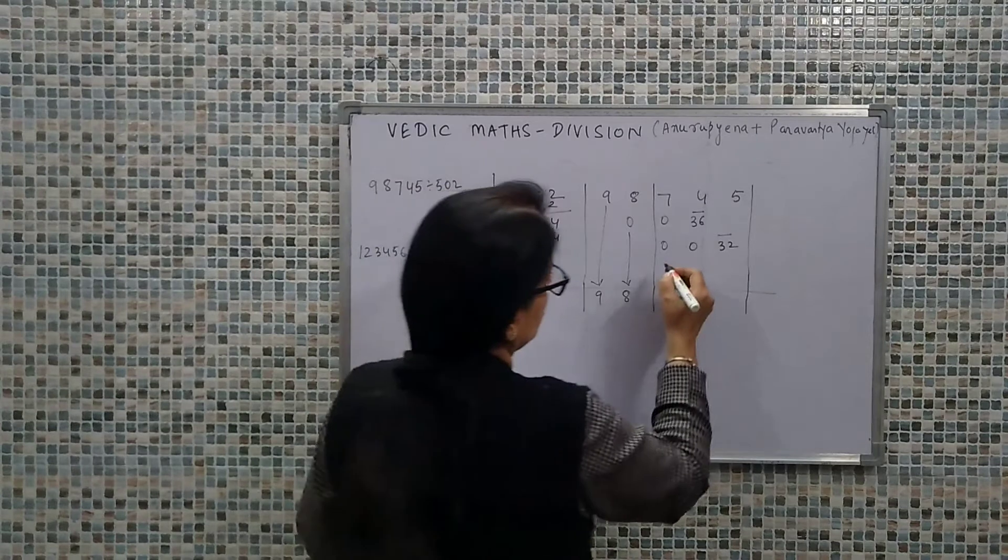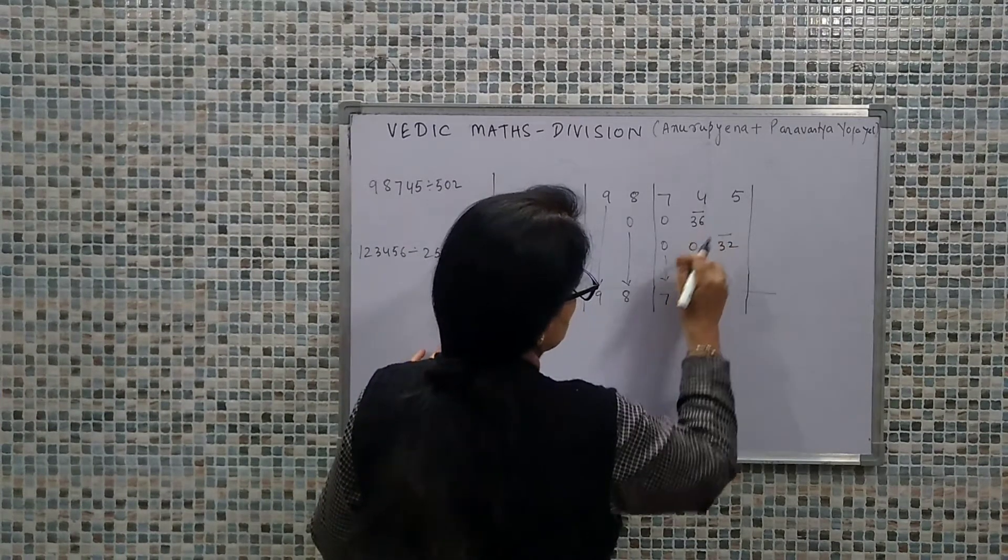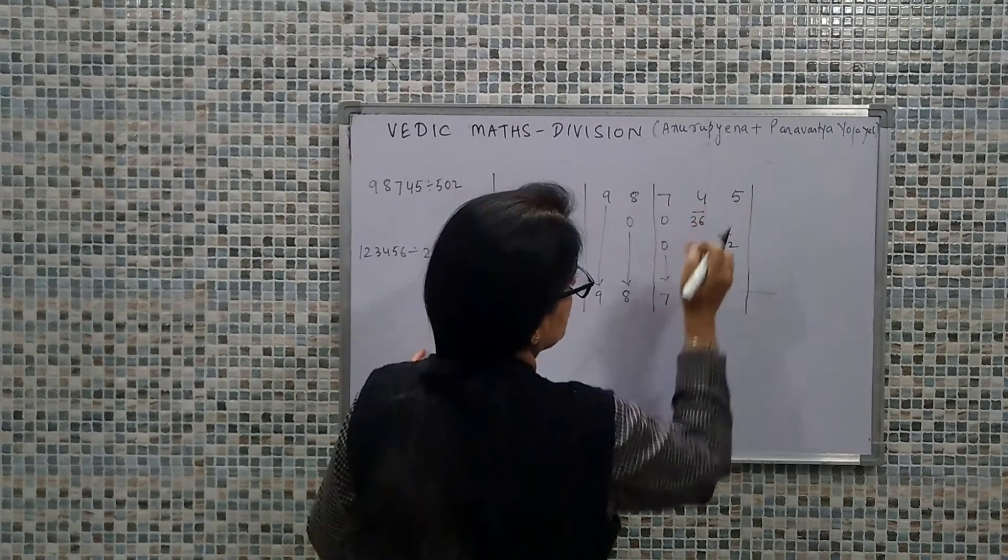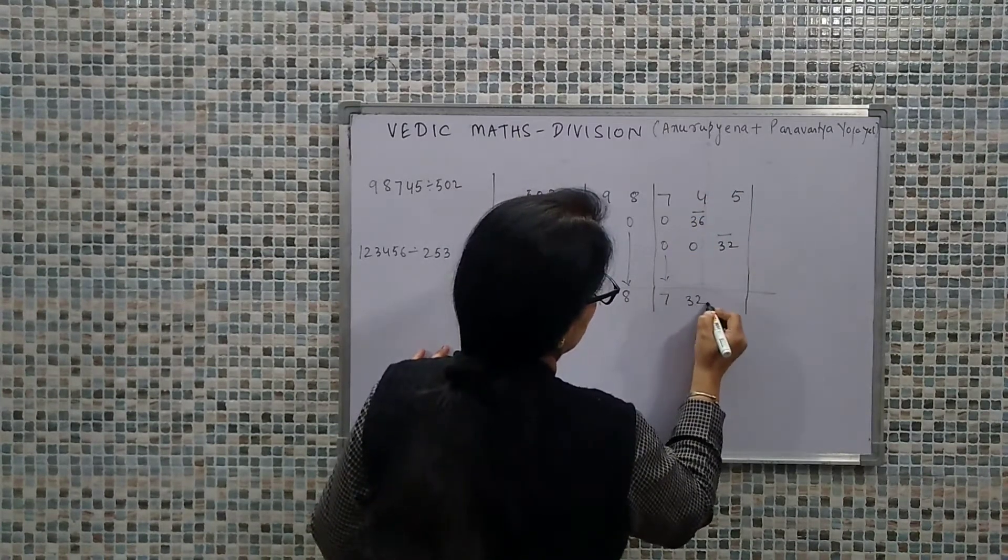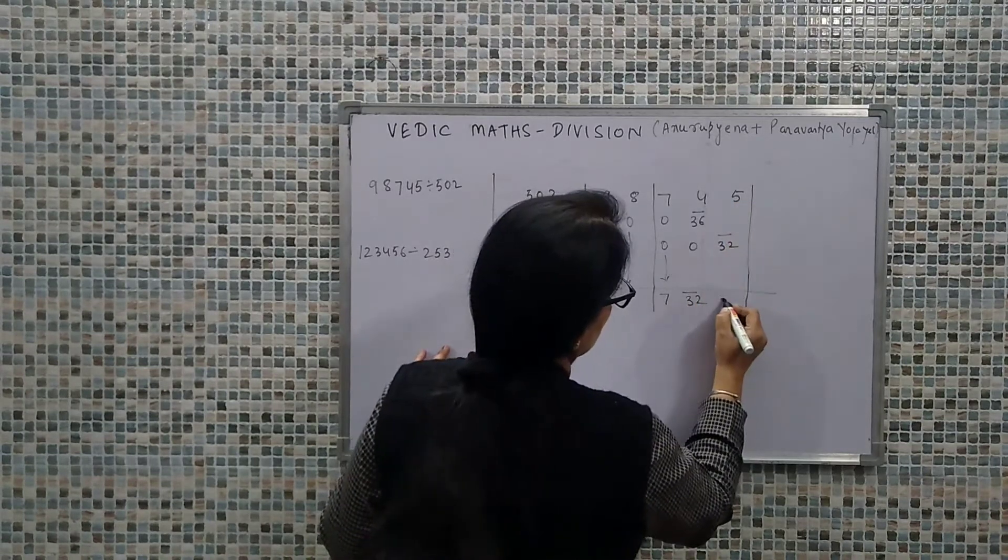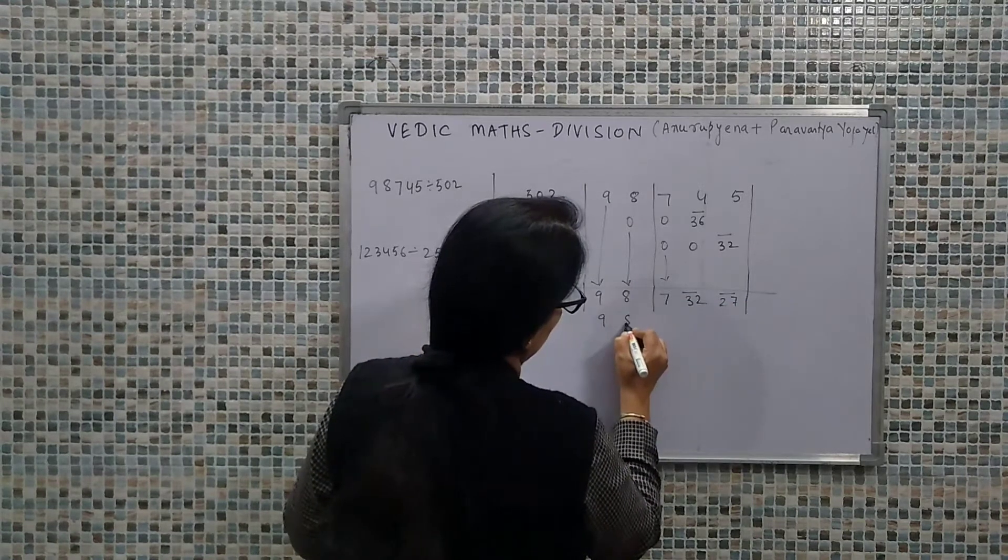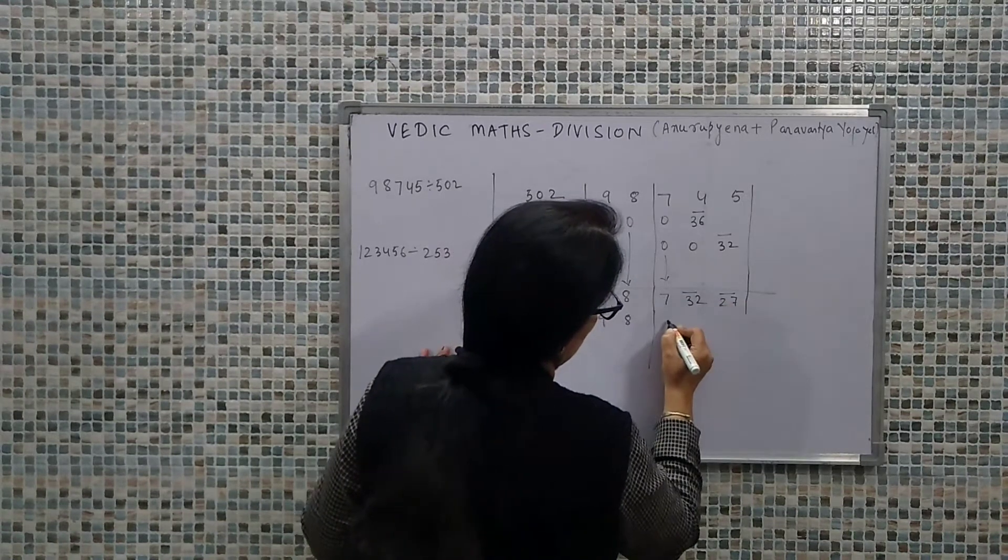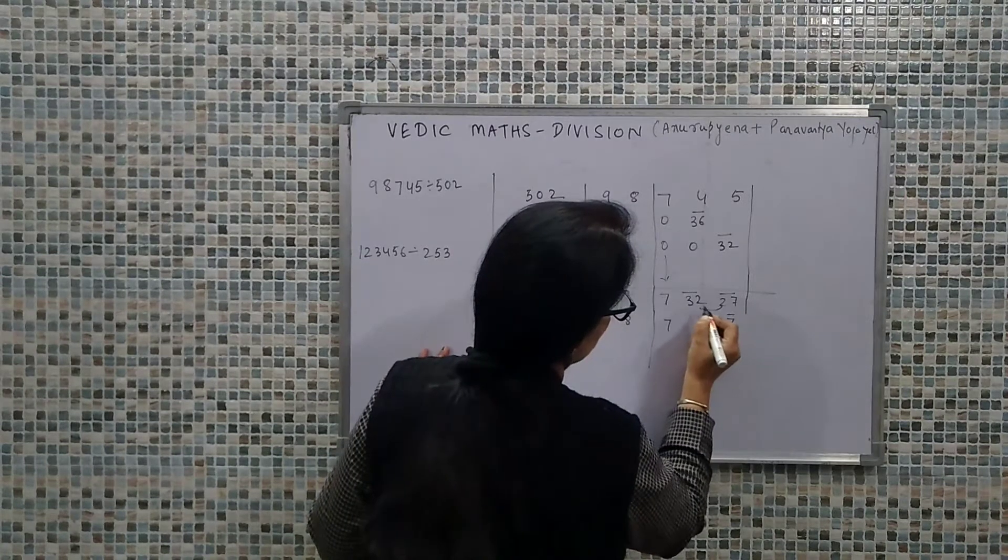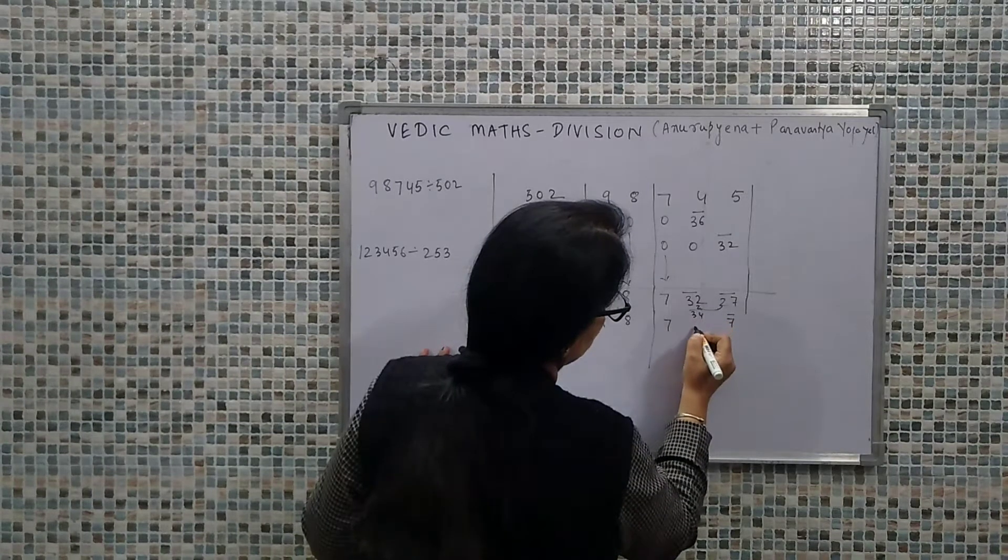So that is all. Now we need to compile the quotient and the remainder. This becomes 7. 36 is negative and plus 4, so that will be 32 bar. 32 bar plus 5, so that will be 27 bar. 98 we keep as it is. This becomes 7. This 2 comes here, so this 7 bar as it is. 32 is also negative, so this will be 34 bar.